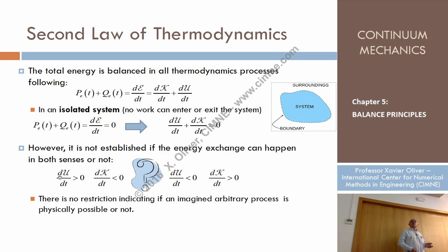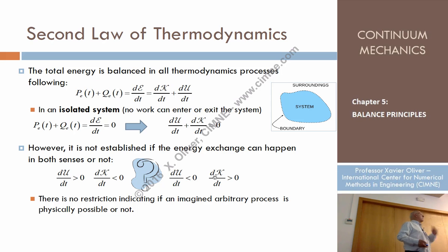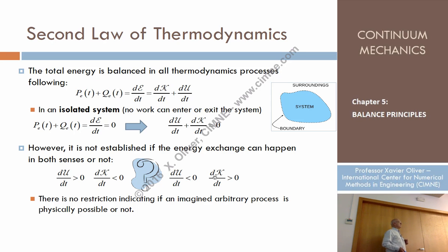The first principle says only that if one variation is positive, the other is negative. But it doesn't say anything about whether the process you are considering is possible, feasible, or not. This very important issue is addressed by the second principle of thermodynamics.